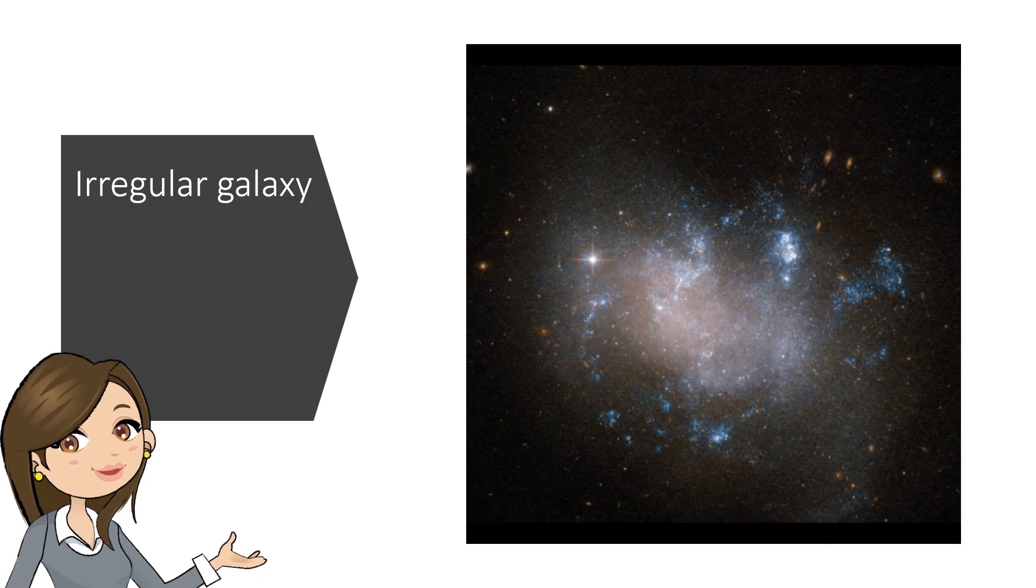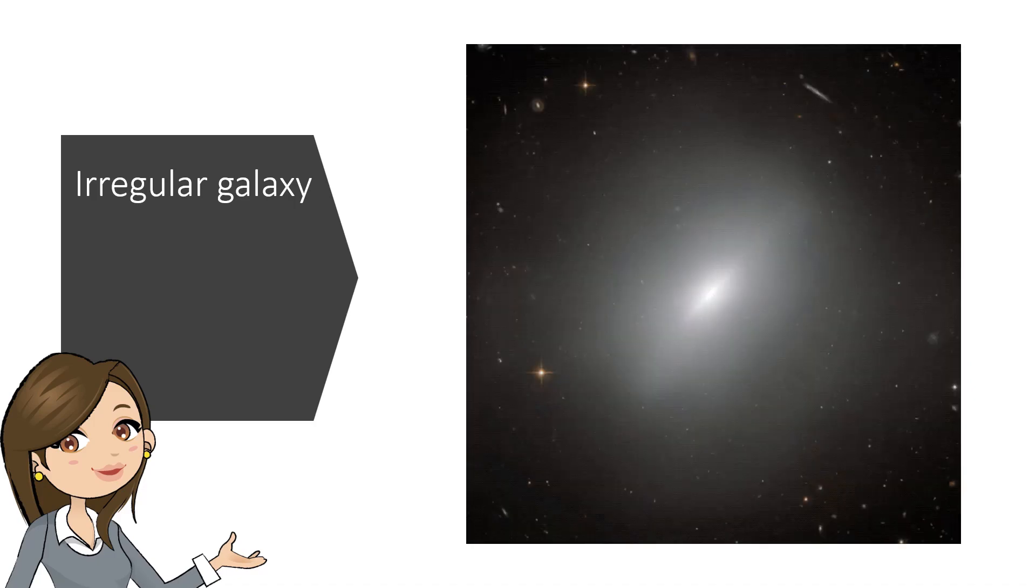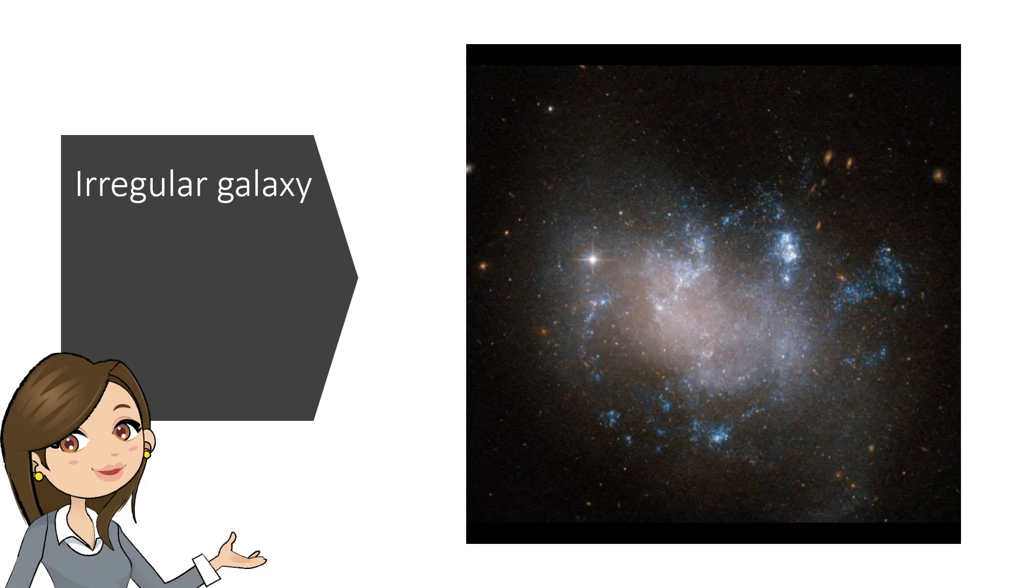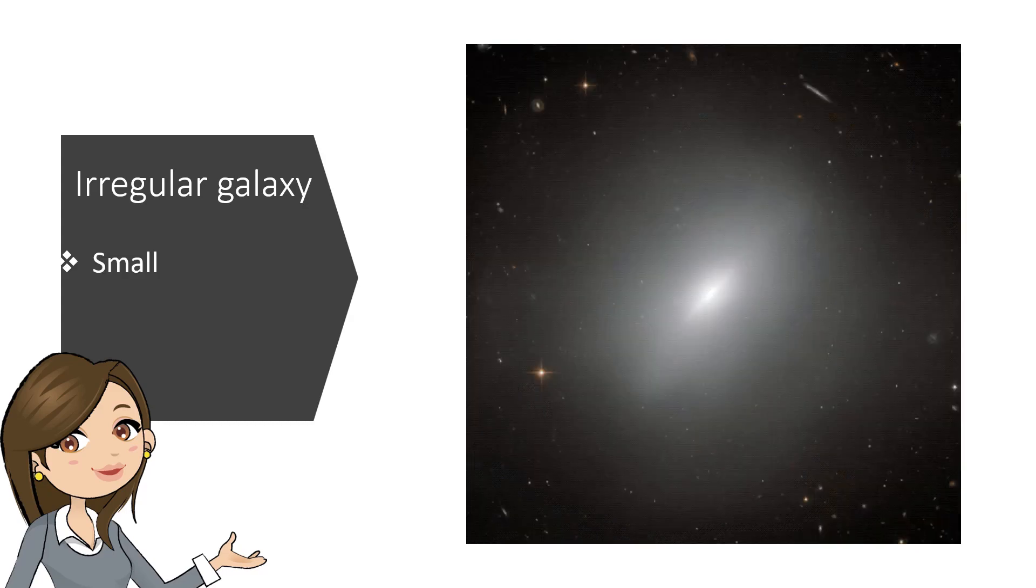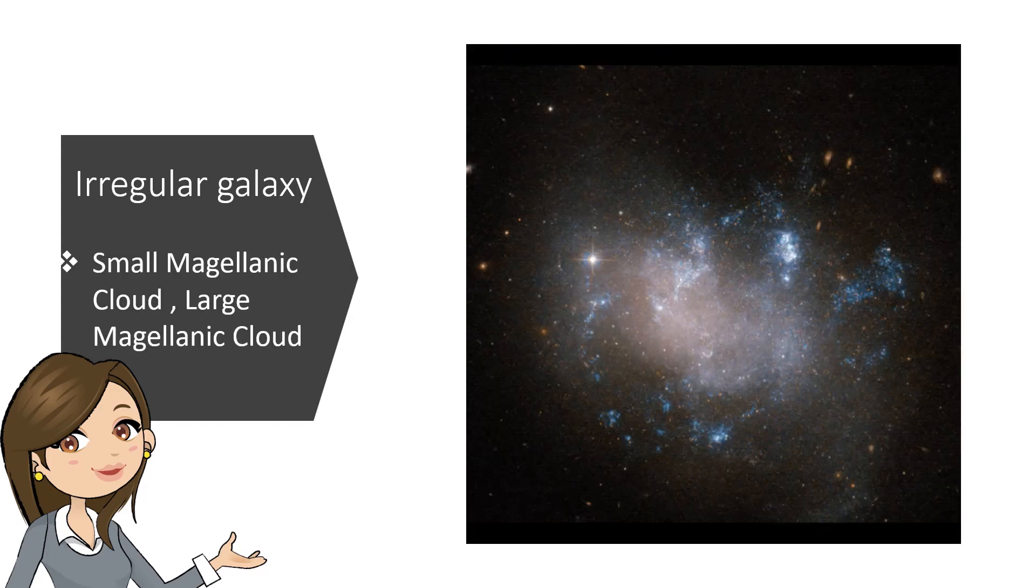There is also Irregular Galaxy. This type of galaxy has no specific shape. It looks irregular. Irregular Galaxy includes Small Magellanic Cloud and Large Magellanic Cloud.